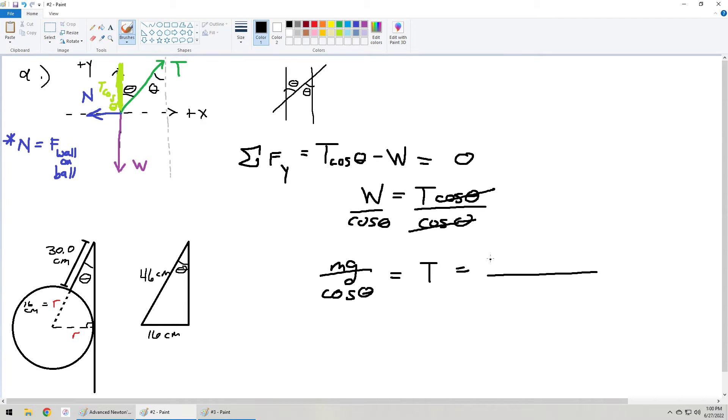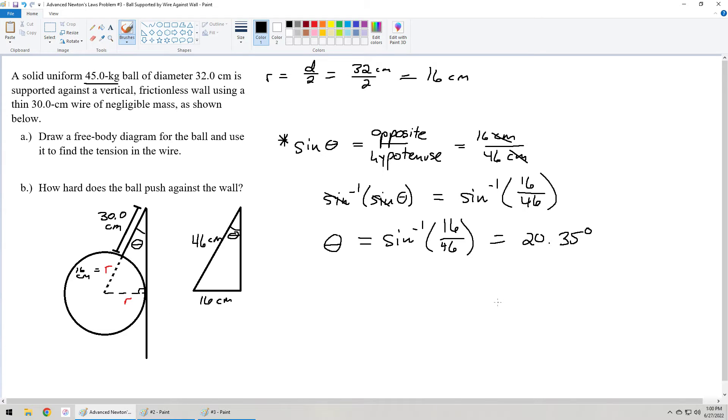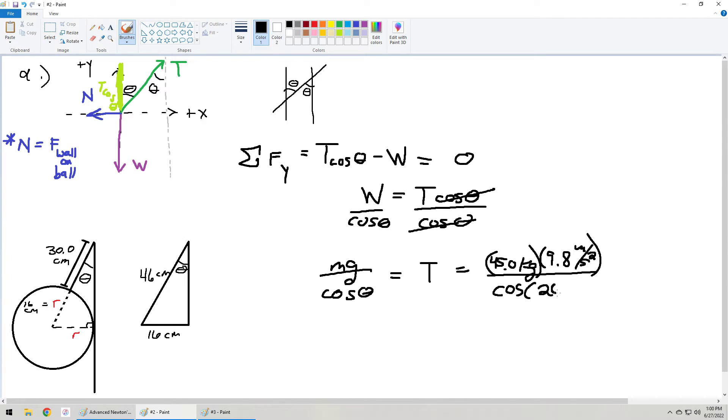If I plug everything in here, we would have 45.0 kilograms for the mass and 9.8 meters per second squared for the acceleration. Divided by the cosine of the angle that we solved for in the problem setup, that's the 20.35 degrees. So, cosine of 20.35 degrees in the denominator. What does this give us? Well, I get 470.36 newtons.